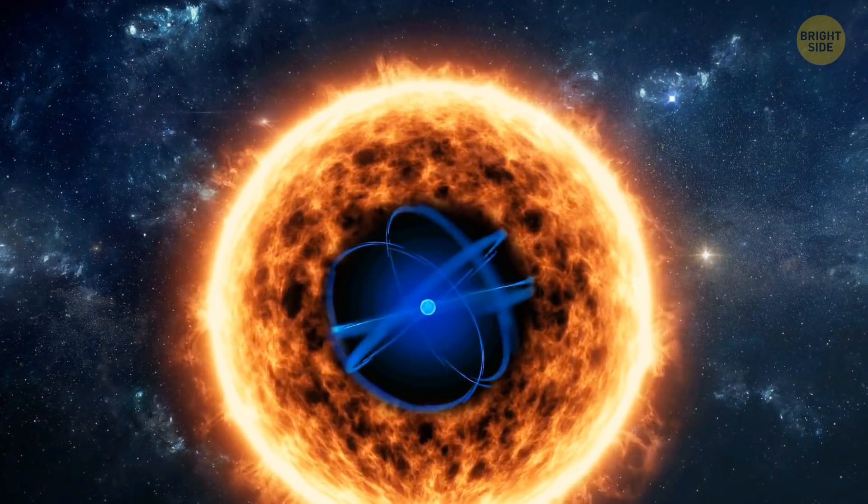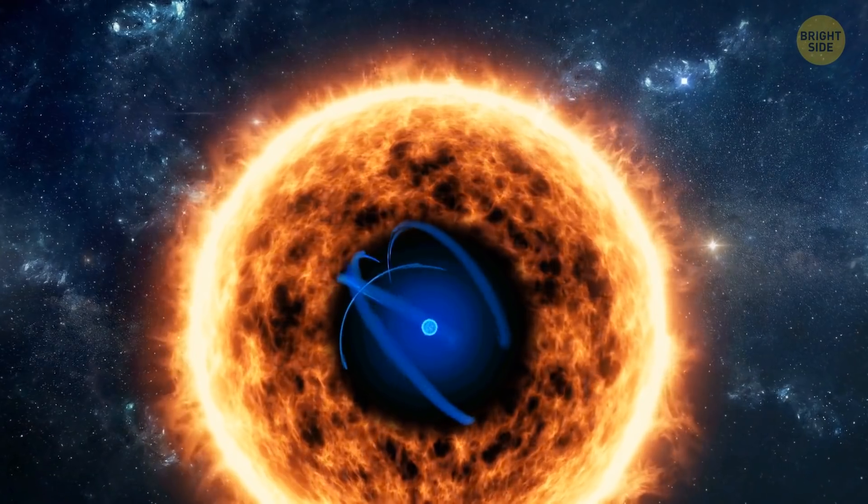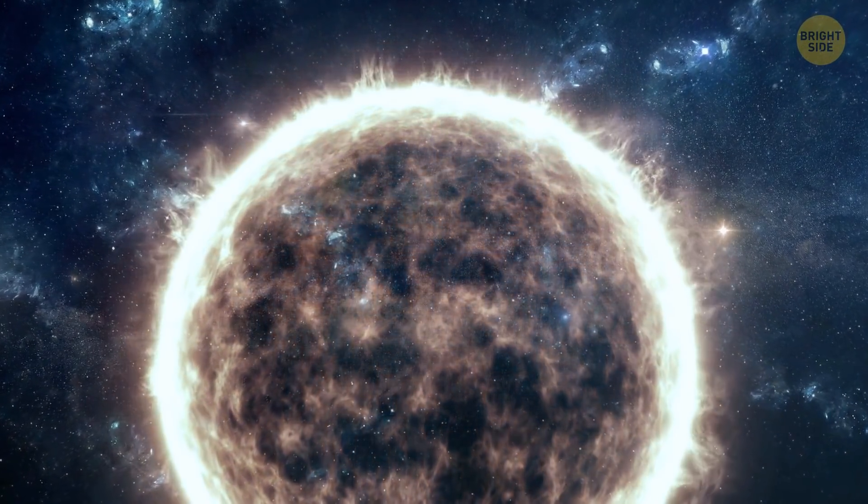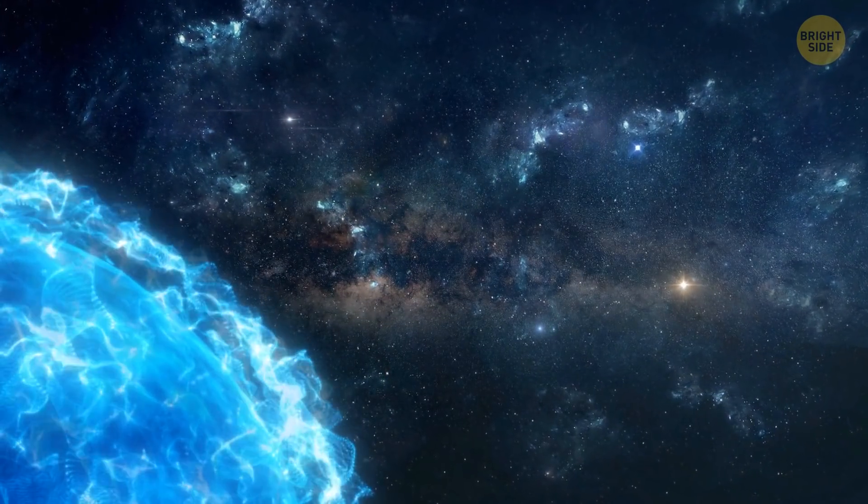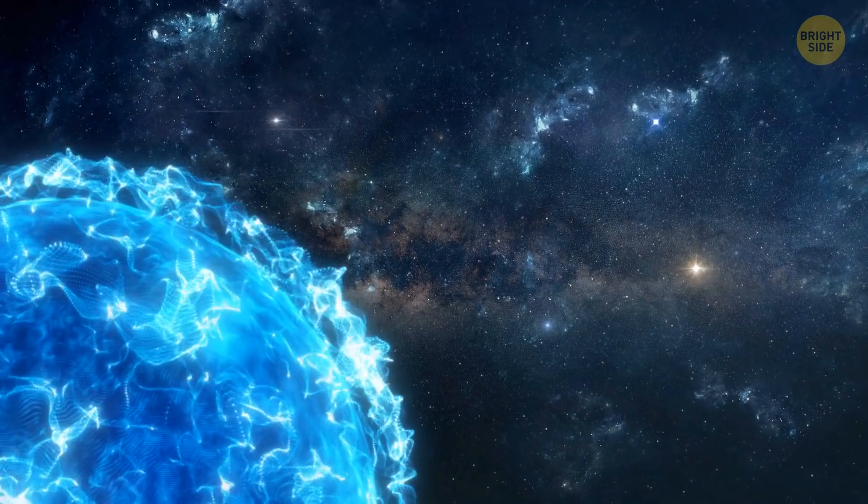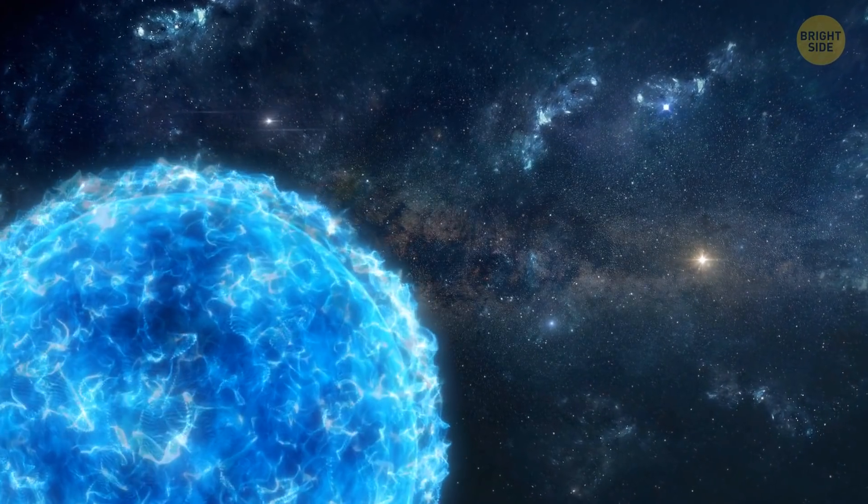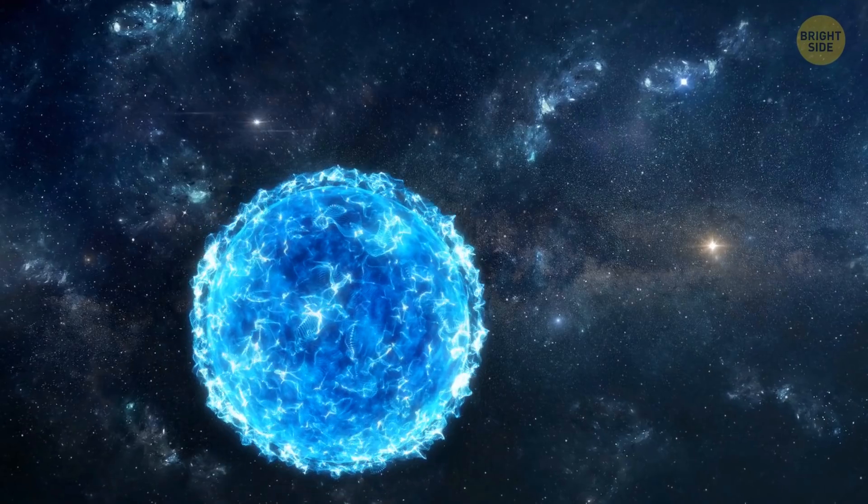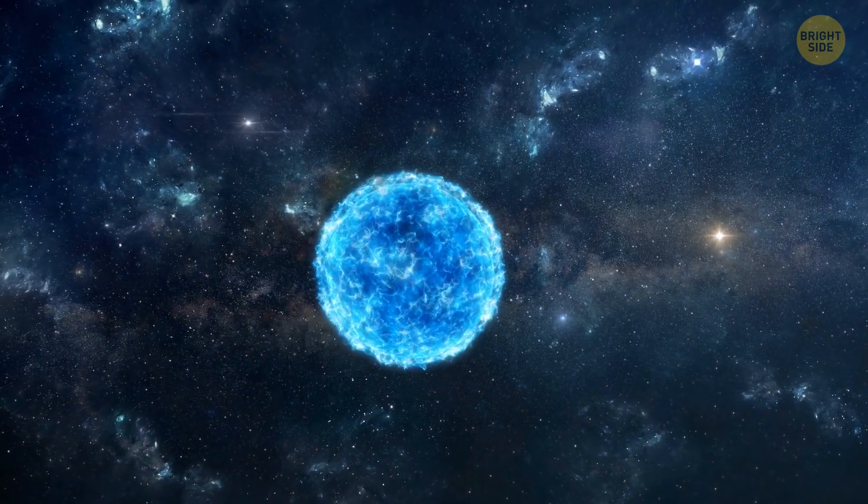It might be because it's run out of nuclear fuel. If it happens, the star starts to cool off. The pressure inside drops, and the gravity starts to squeeze inward. And then, more than a million times the mass of our planet collapses within 15 seconds.